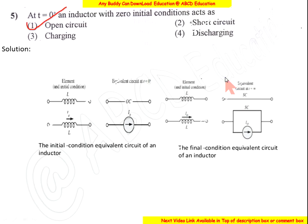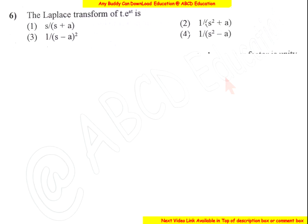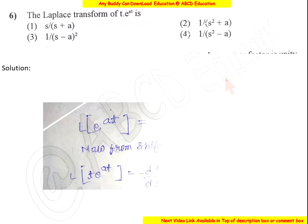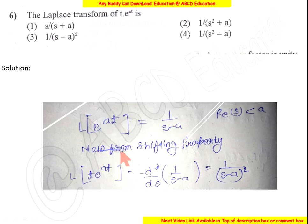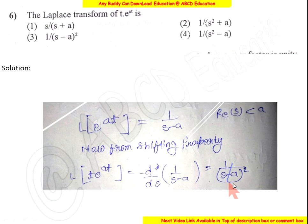The Laplace transform of t·e^(at): the Laplace transform of e^(at) is 1/(s−a). Applying the shifting property, the Laplace transform of t·e^(at) is 1/(s−a)². So the answer is option 3.